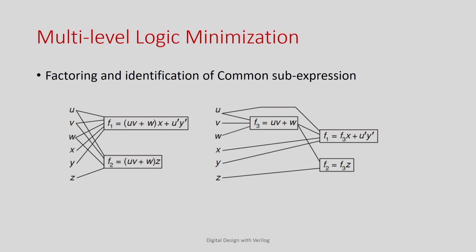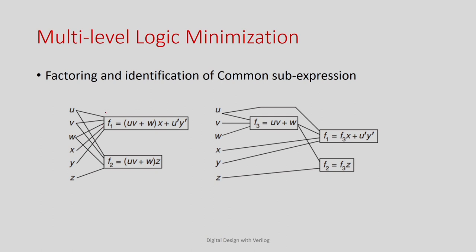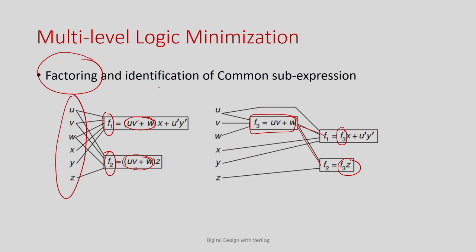Specifically when you have multiple outputs for a circuit where the inputs are the same, it is advisable to identify the common sub-expressions among the outputs and reuse that resource. For example, suppose you have two outputs f1 and f2 with six inputs u through z. You identify that u-plus-w is common in both. You compute it separately as f3, then reuse f3 in computing both f1 and f2, reducing circuit area and delay.